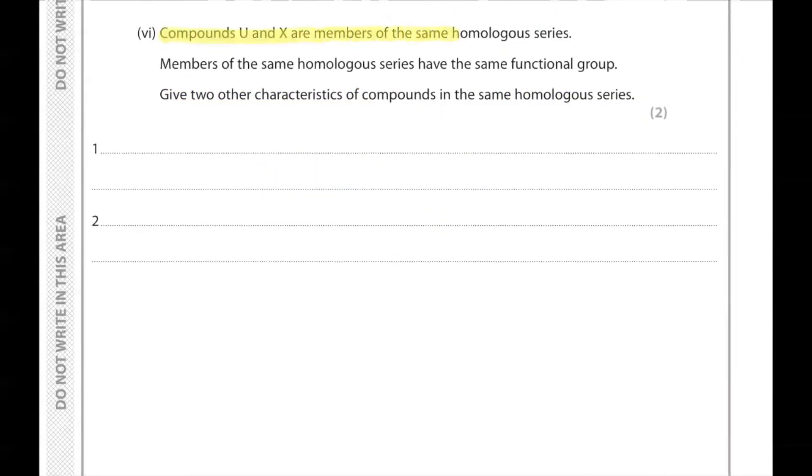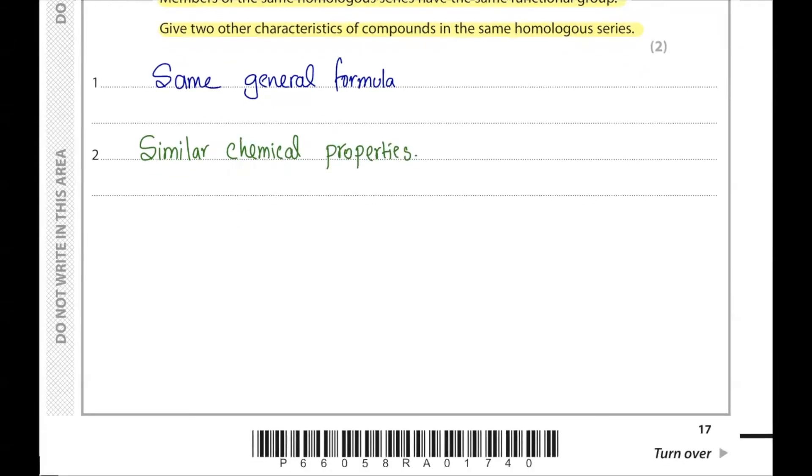Compounds U and X are members of the same homologous series. Members of the same homologous series have the same functional group. Give two other characteristics of compounds in the same homologous series. Members of the same homologous series always have the same general formula and they have similar chemical properties. Bonus point: Members in the same homologous series have trend in their physical properties and each consecutive member differs by CH2 group.